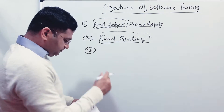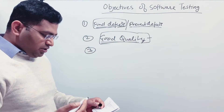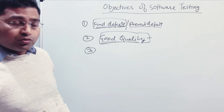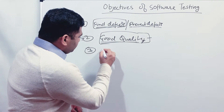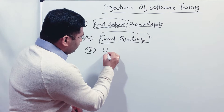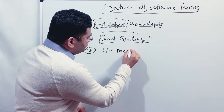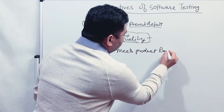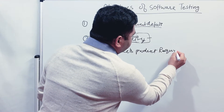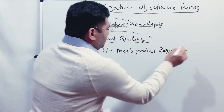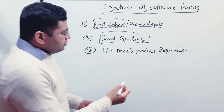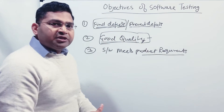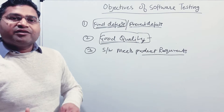The third objective is basically to determine that the software meets the product requirements. What does this mean? Product requirements — when we say product requirement, it is the requirement that is coming from the business or from the customer.